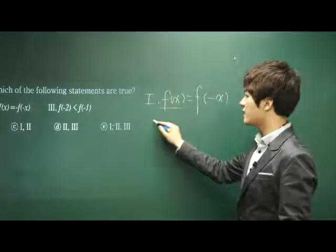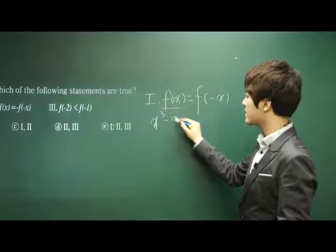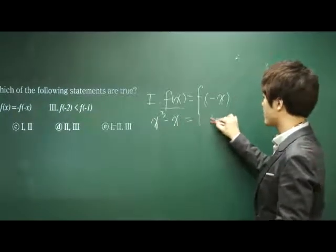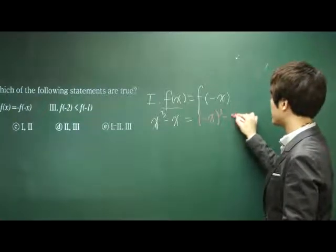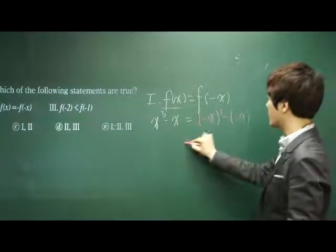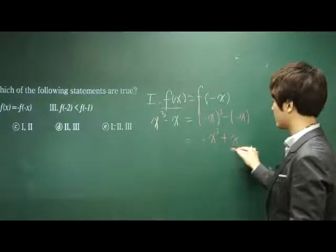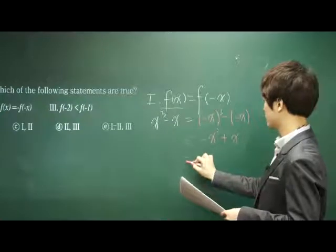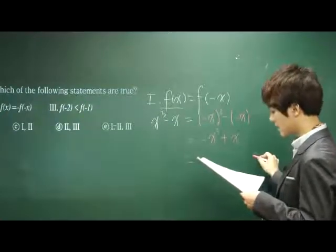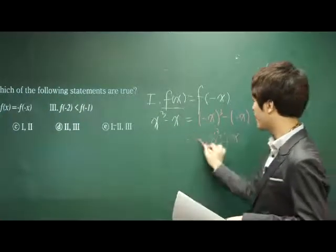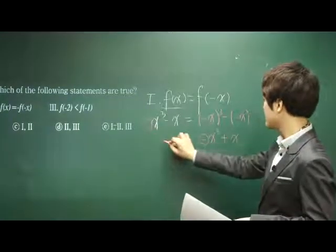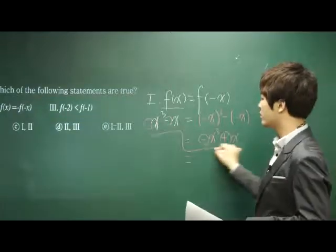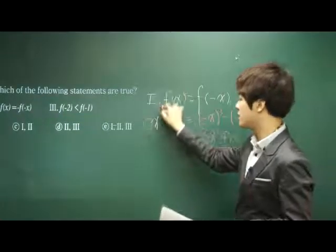We already know that f(x) is equal to x to the third power minus x. Let's see if it's right. Negative x to the third power minus negative x is equal to negative x to the third power plus x, right? And this is, is it correct? No, this is not true. Why? Because there's no negative here, but there's negative I see here, and there's negative here, but I see positive here. So, this is not true. So, the first statement is not true.